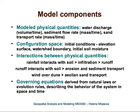To model a landscape process, we need to define model components. First, we need to decide what the modeled physical quantities will be. For erosion and sediment transport, we need to model water flow or water discharge, because that is the quantity that will carry the sediment. Then we need to model sediment flow rate. We also need to define configuration space, which essentially defines initial conditions — usually the elevation surface that controls fluxes in the landscape. Finally, we define interactions between physical quantities to obtain realistic simulations.